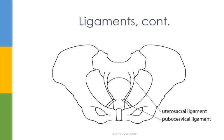Now let's take a different view of the remaining ligaments. We have the pubocervical ligament, which connects the cervix to the posterior surface of the pubic symphysis. Then we have the uterosacral ligaments, which connect the cervix posteriorly to the sacrum.